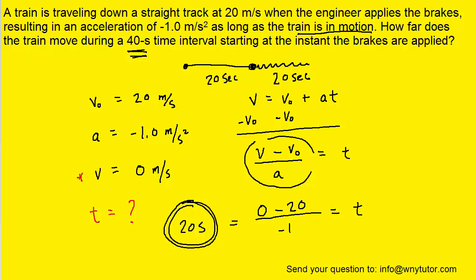So we really only need to calculate how far it goes in the first 20 seconds, I should say. The second set of 20 seconds, the train is just stopped and it's sitting there, and it's not covering any additional distance. So our task becomes to calculate the distance it travels in the first 20 seconds.